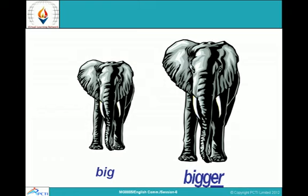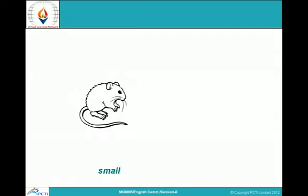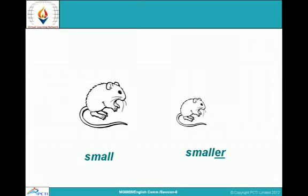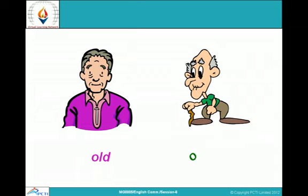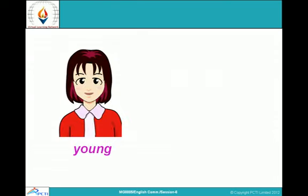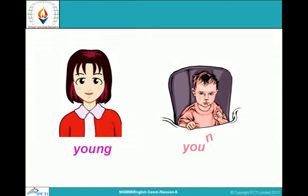For example: this bottle is smaller than that bottle. Small becomes smaller. This rat is smaller than that rat. Old becomes older — this man is older than that man. My shirt is whiter than his shirt. Young becomes younger — I have a younger sister. This girl is young and she is even younger.